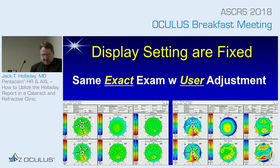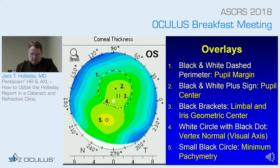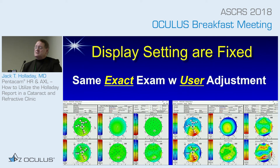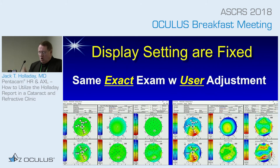One thing I always deal with is that people want to adjust the measurements or the display. The problem is this: the one on the left is exactly the same exam as the one on the right, but the user made adjustments — and you see everything green on the left. Yellow is suspicious and red is danger, so it's important that every user, everywhere in the world, is looking at the same standardized map with the same sensitivity and color settings.